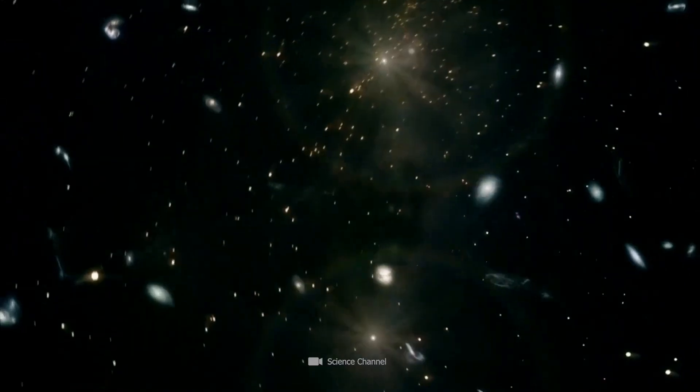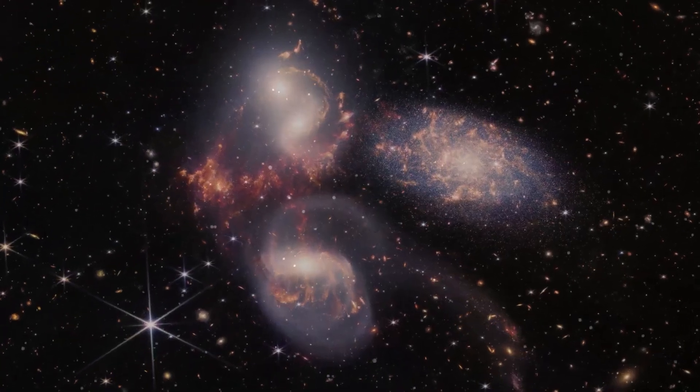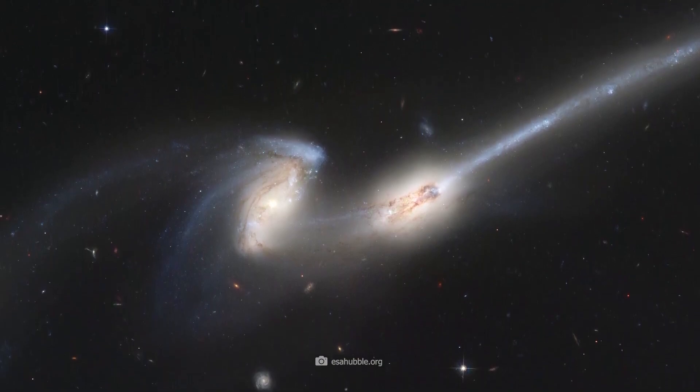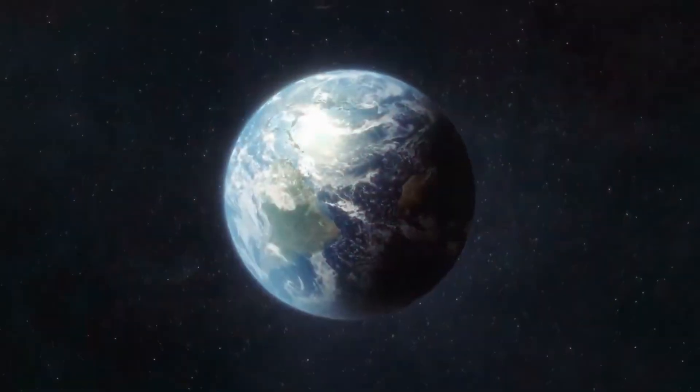This enormous network of galaxy clusters is connected by invisible threads of dark matter. There are hundreds of galaxy clusters in the Shapley supercluster, consisting of several million galaxies. We recognize structures, the filaments by which galaxies and galaxy clusters orient themselves.